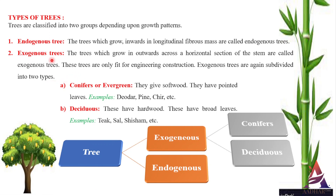Exogenous trees are further classified into two groups. First is conifers or evergreen, and second is deciduous. Conifers show distinct annual rings. They are also known as evergreen trees and the leaves of these do not fall till new ones are grown, as these trees bear cone-shaped fruits, they are given the name conifers. These trees yield softwoods. Deciduous trees do not show distinct annual rings.